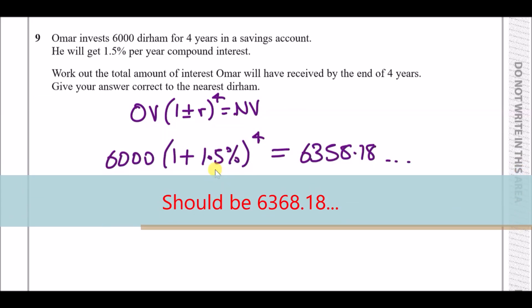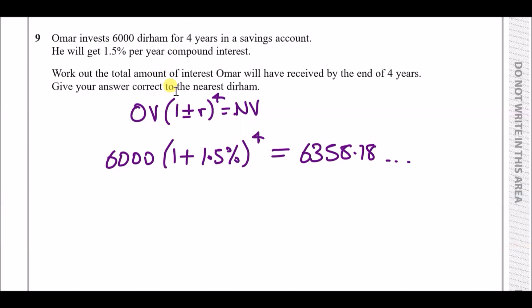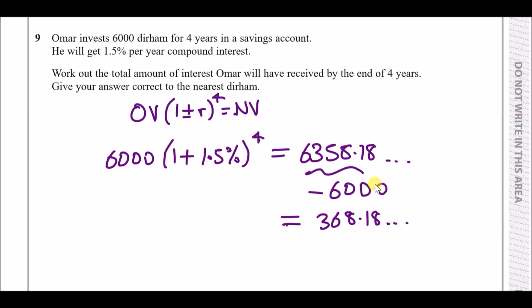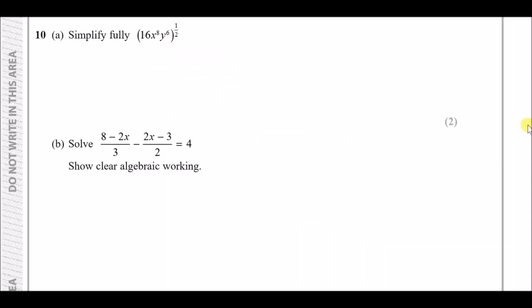That 6,358.18 is the total money after four years. The interest is the extra money above the original amount, so subtract 6,000: 6,358.18 − 6,000 = 368.18 dirhams. Since the question asks for the answer to the nearest dirham, the final answer is 368 dirhams.